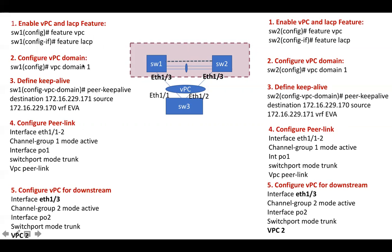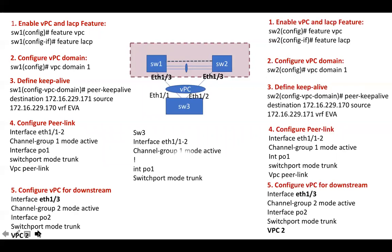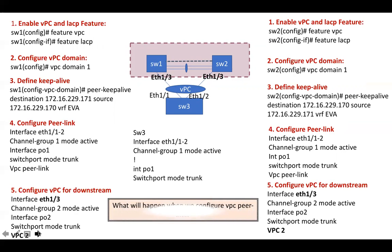Please keep in mind the VPC domain identifier has to be the same on both devices — on Switch 1 as well as Switch 2 — as this identifier will be used to assign the VPC system MAC address. This VPC system MAC address represents a logical switch to downstream devices, i.e., to Switch 3 in this topology. On Switch 3, we are going to configure a normal port channel as we do in a traditional environment.